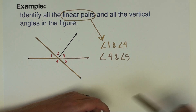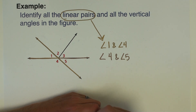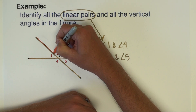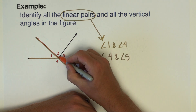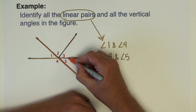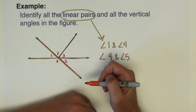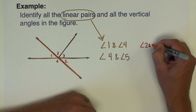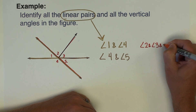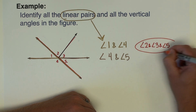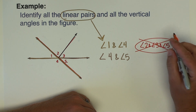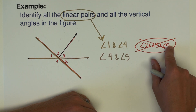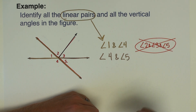Let me list out a common mistake. I see a lot of people look at this line and say that these angles here make a straight line, so they want to say angles two, three, and five. The reason why that doesn't work is it's not a pair. A pair is two angles, and that's three angles that make up the straight line, so we don't want to use that.